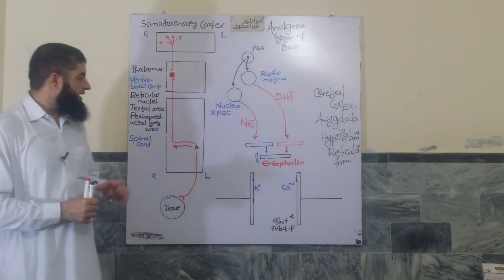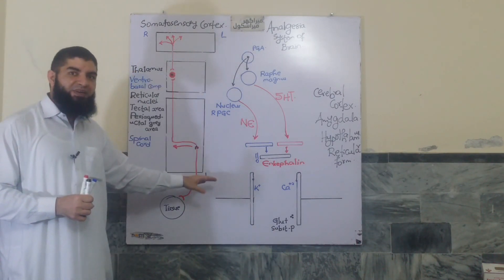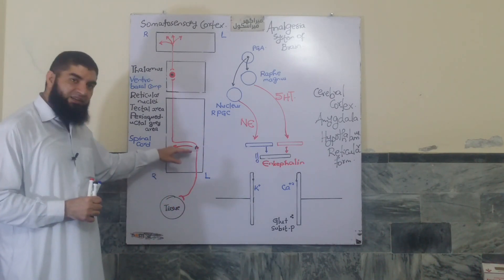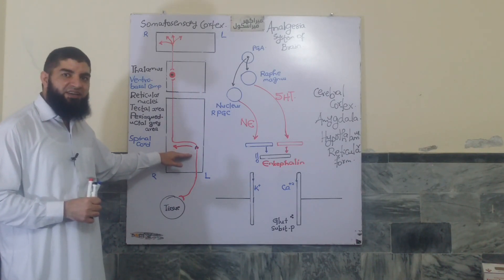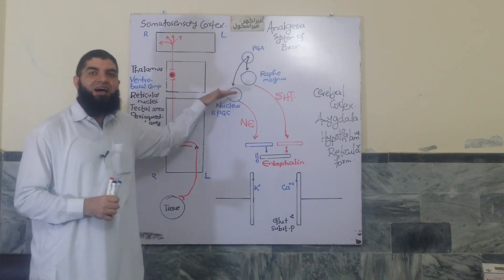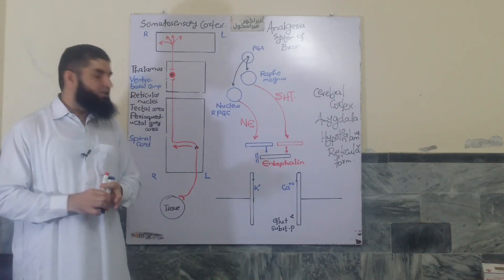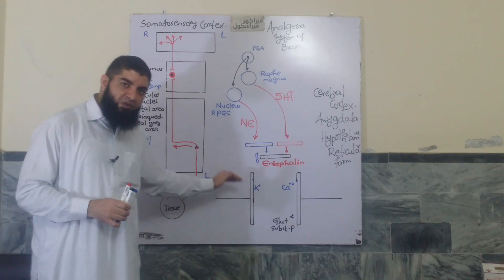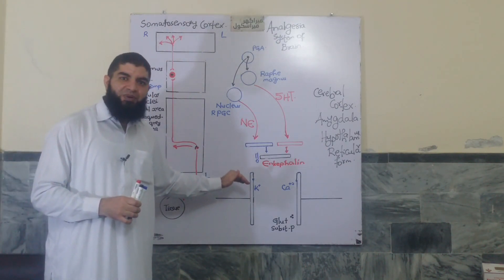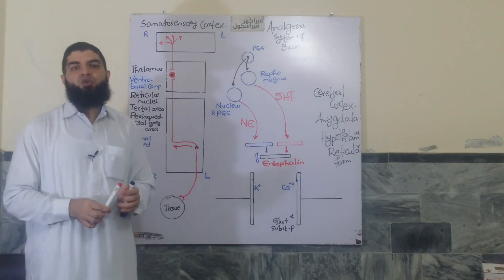It has a descending pathway to suppress pain impulses and that suppression is done usually at two levels. Either at this level, at the entry point of pain signals from periphery into the spinal cord, or suppression of those signals at still higher levels. So here we have a magnified view of the same diagram so that we could discuss those suppression pathways in a bit more detail.